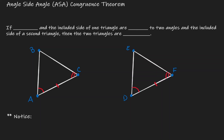If we have this combination of an angle followed by a congruent side followed by a congruent angle, then we can claim that these two triangles are congruent. In this case, we can claim that triangle ABC is congruent to triangle DEF. Notice that we have two congruent angles and one congruent side, but the side is within the two congruent angles.